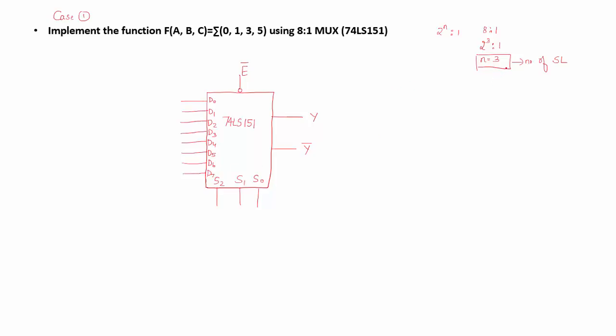Since the number of select lines equals the number of input variables, I can assign each of the select lines to an input variable. So S0 will be connected to C, S1 will be connected to B, and S2 will be connected to A. When I do these connections, each of the data lines will represent a minterm.